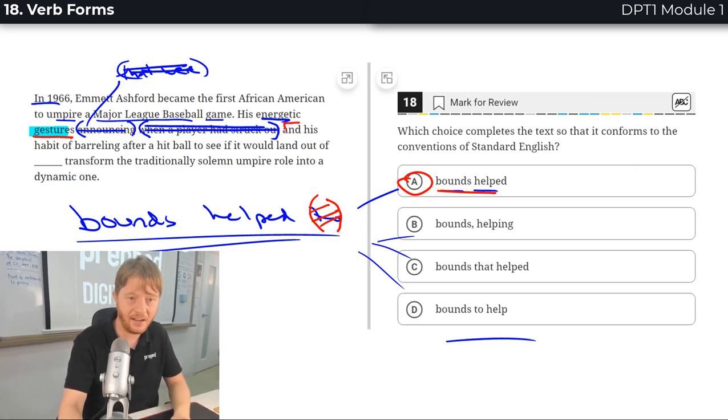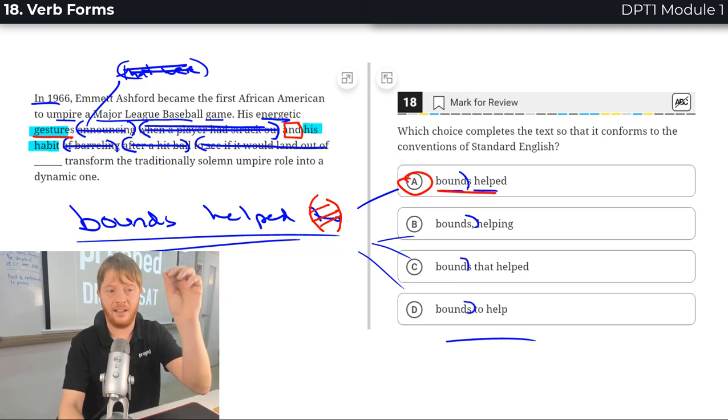His gestures and his habit. That's the second subject. Of barreling. Prepositional phrase. After a hit ball. Prepositional phrase. To see if it would land out of bounds. Infinitive phrase. All of those are not part of the subject either. The subject is his habit.